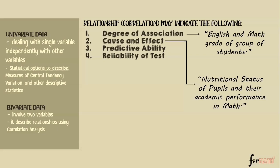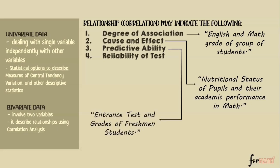Number three: predictive ability. If two variables have a relationship, we can use statistical models to make predictions. For example, given an entrance test and the grades of freshman students — if there is a relationship between the two variables, we can predict or estimate the grade a freshman student will get based on their entrance exam score.